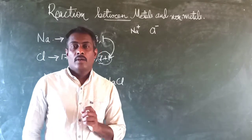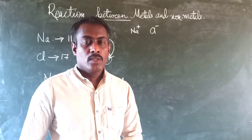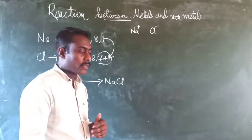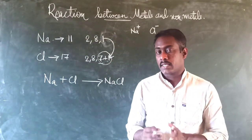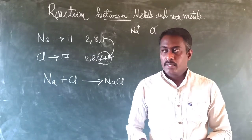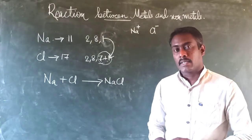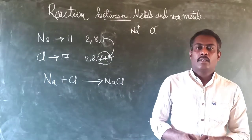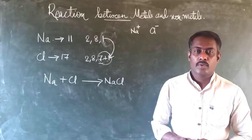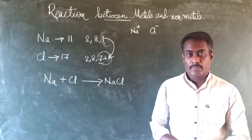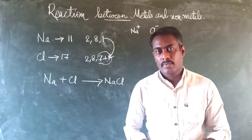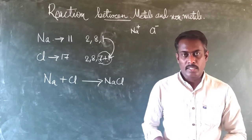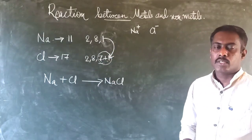Regarding conductivity: ions are produced during the formation of ionic compounds, so there is a possibility to conduct electricity, since charged particles can conduct electricity. However, the physical nature of ionic compounds is rigid, so there is not much space between them to allow charged particles to move and conduct electricity. Therefore, in a solid state, ionic compounds do not conduct electricity. But in dissolved form, when an ionic compound is dissolved in water, there is much more free space, so the ions are free to move and can conduct electricity.